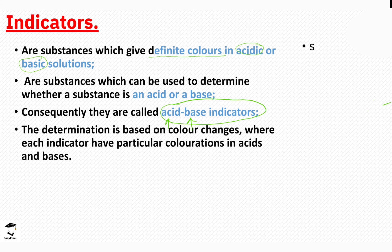We usually refer to them as acid-base indicators because they help us distinguish between acids and bases. Some indicators available in the market include litmus paper, phenolphthalein, and methyl orange. Different indicators will give different colors in different acids and bases. There are some that are recommended to use and some that are not — we are going to see that difference as we continue with the topic.